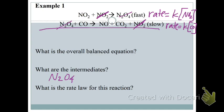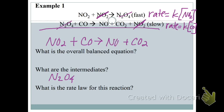The overall balanced equation is those two steps added together, leaving out what you crossed out: NO₂ + CO yields NO + CO₂. We check that it's balanced — it is. Our intermediate was N₂O₄. Even though we crossed out one of the NO₂ molecules, there's still one left, so NO₂ is not an intermediate.